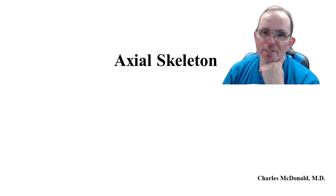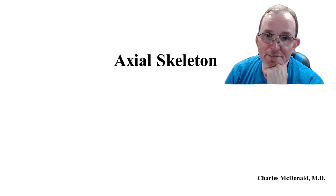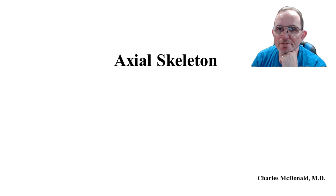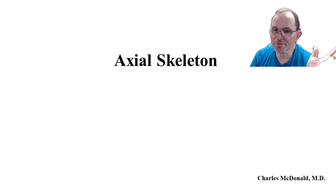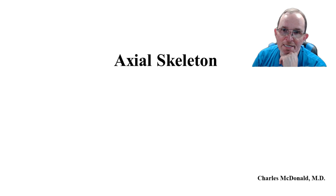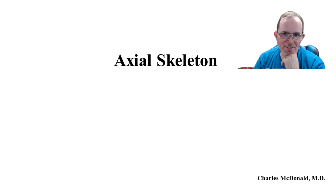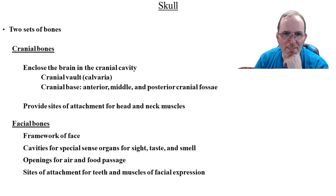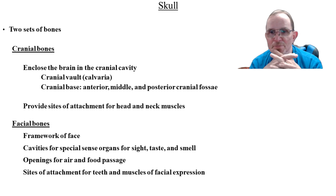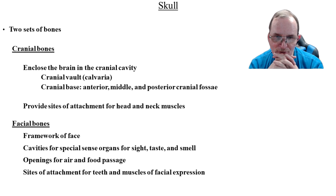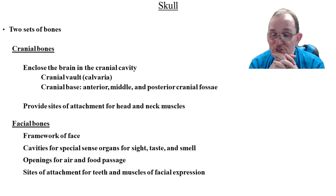Hey guys, we're going to be talking about Chapter 7, the axial skeleton. We've covered this in class, but I want to go through and make sure everybody's good on this. The axial skeleton is going to be the skull, the vertebrae, the ribcage, and the sternum. That's the axial skeleton.